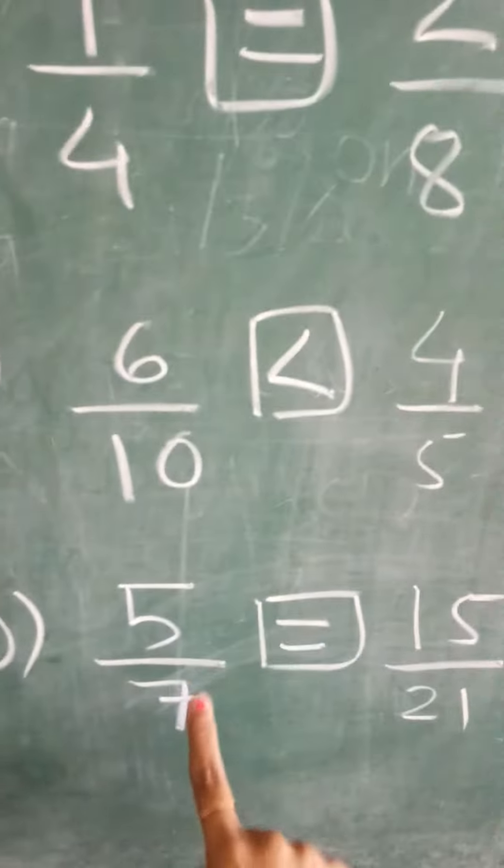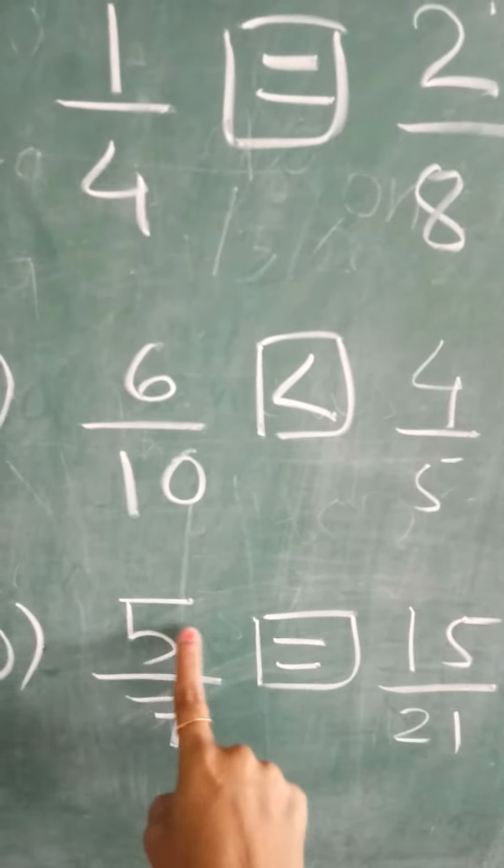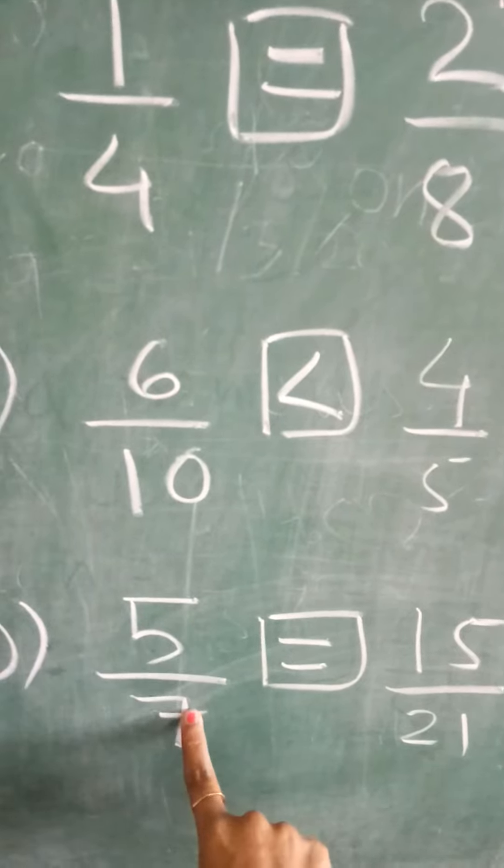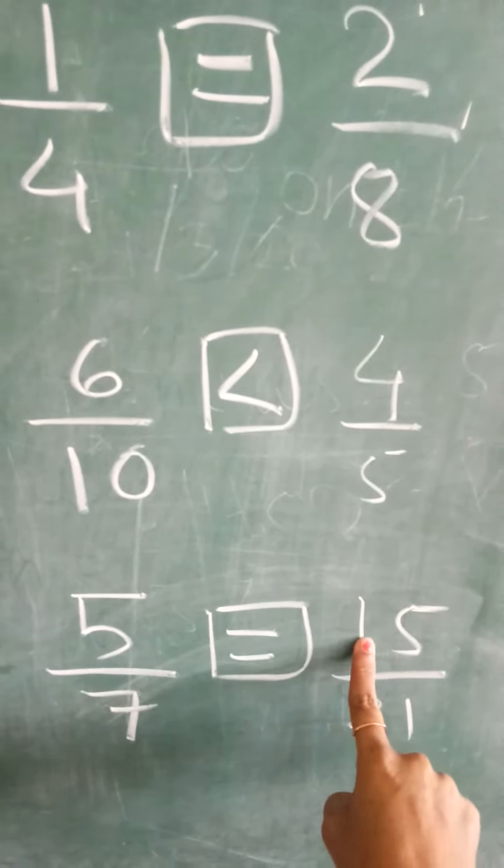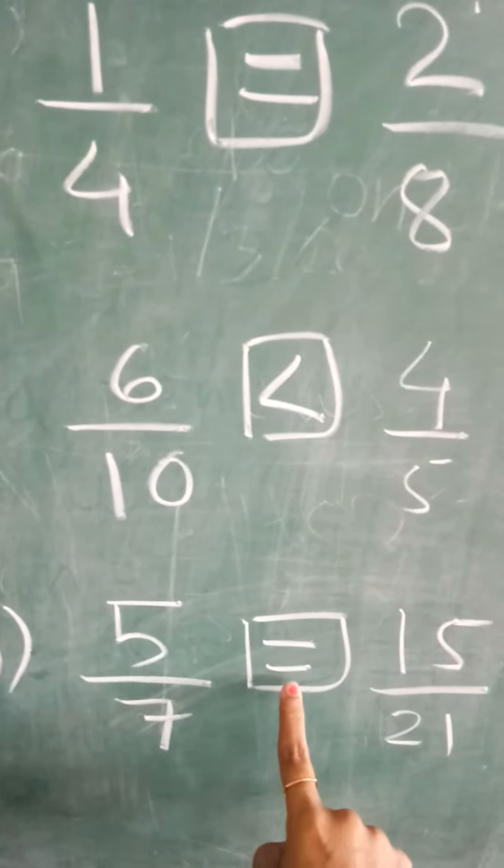Then 5 upon 7, 15 upon 21. Cross multiply: 21 fives are 105, 15 sevens are 105. Both sides are 105, so we have to put the equal sign.